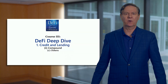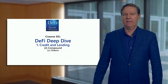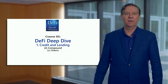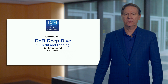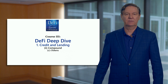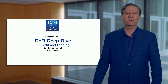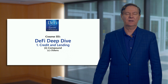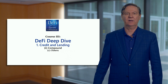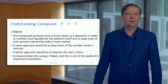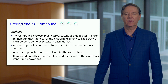Let's continue our exploration of Compound and talk about an equity token. We talked about equity tokens in the previous course, and this is going to be a tangible example. We'll talk about cTokens — lowercase 'c' and then token. Let's go through and figure out what's actually going on here.